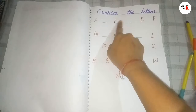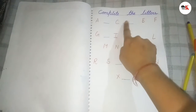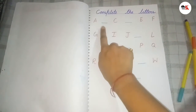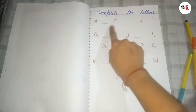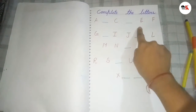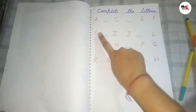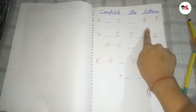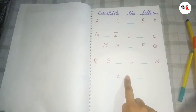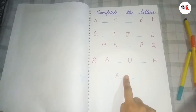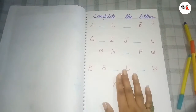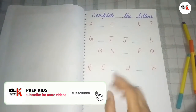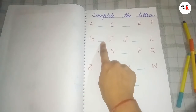Now you can see I have written 'complete the letters.' As you can see, A is missing, C is missing, E, F, G, H are missing. Those missing letters must be completed by the child. This is very good for children — it puts a little pressure on their mind to think about what letter will come next.